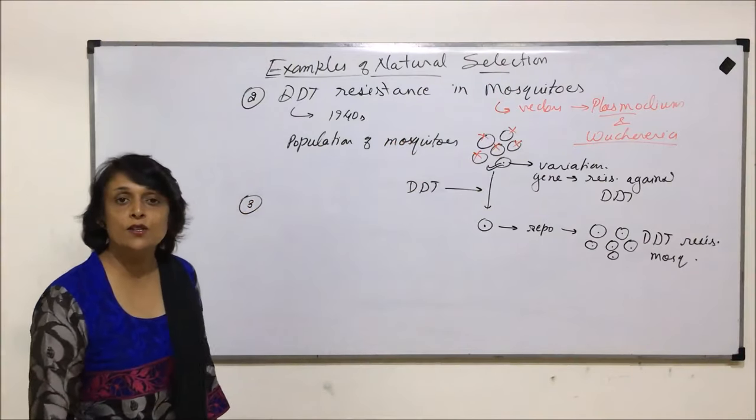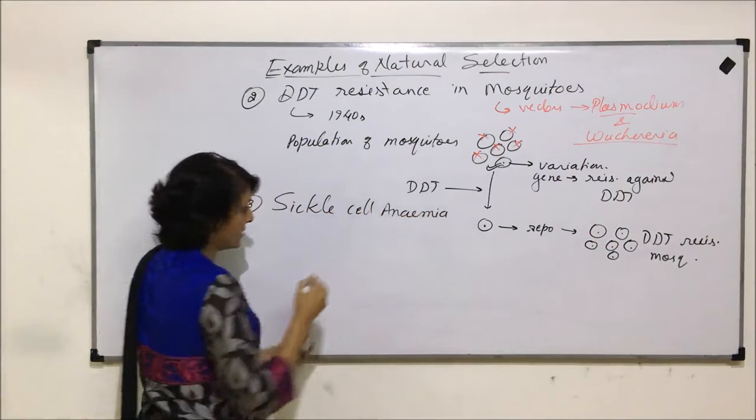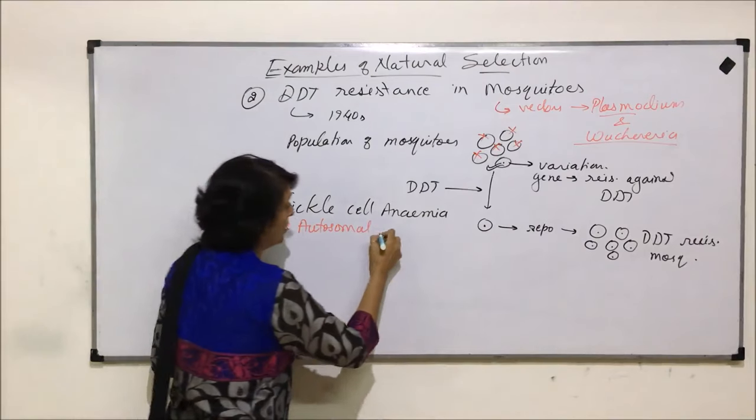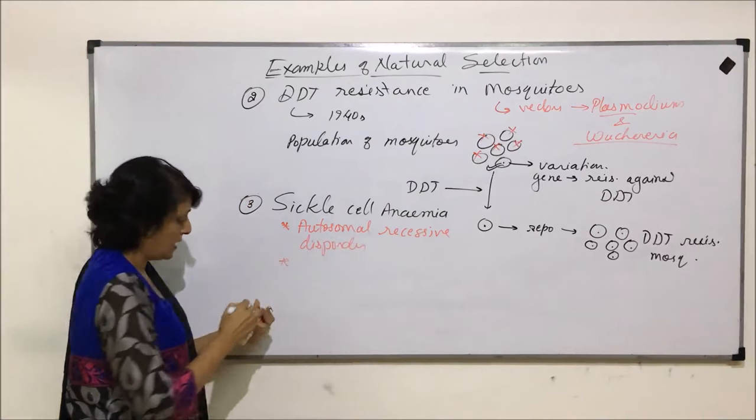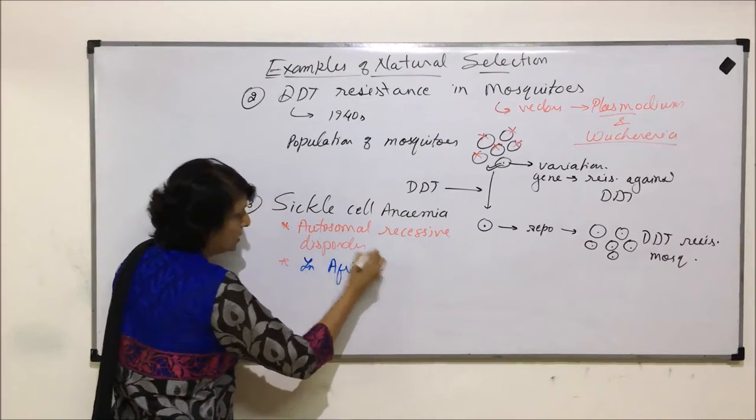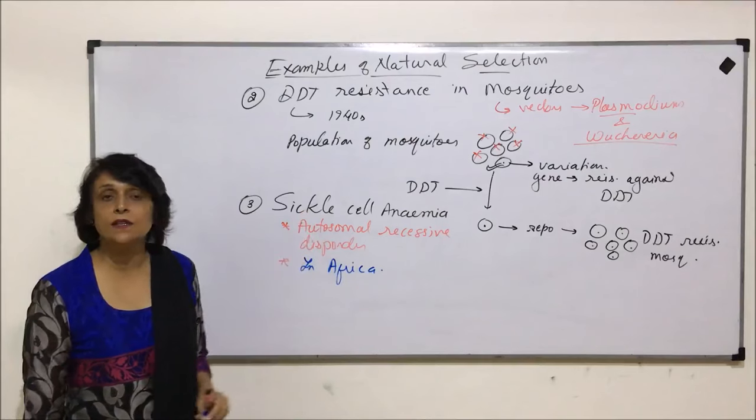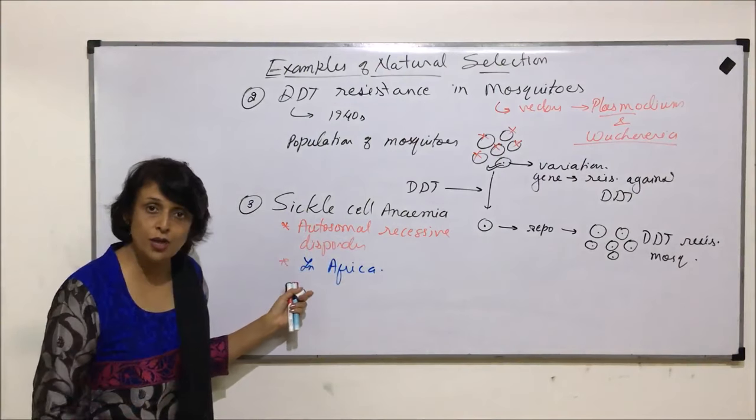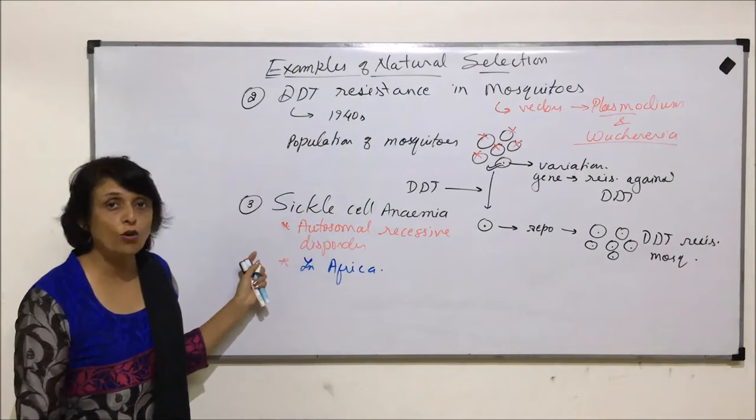Let us take one more example and that is of sickle cell anemia. Sickle cell anemia is an autosomal recessive disorder, and it is predominantly found in African continent. What exactly happens when the person gets sickle cell anemia?